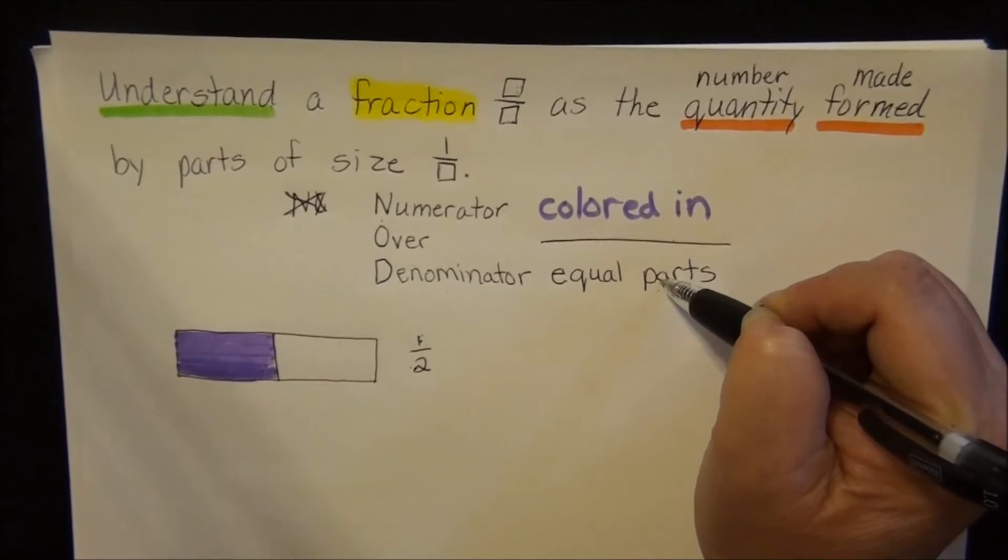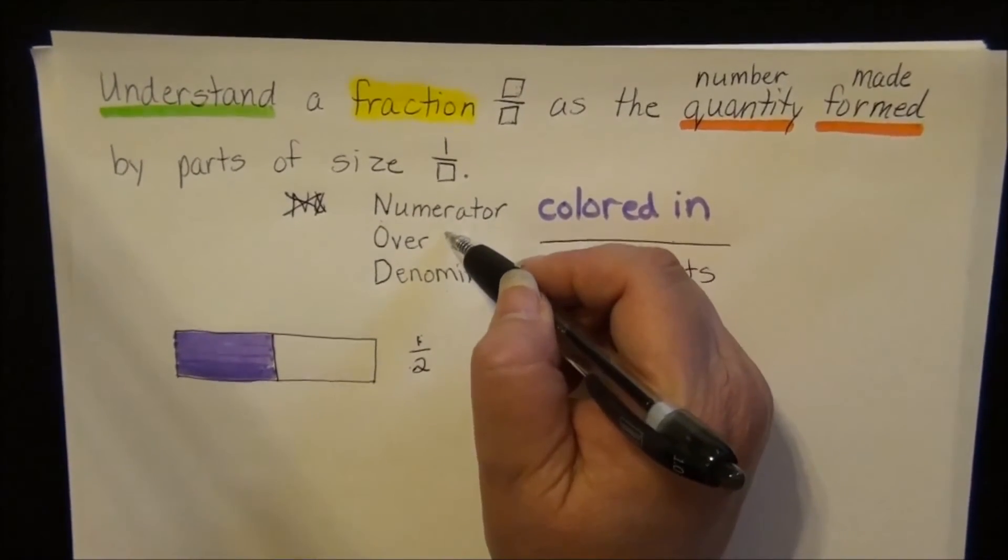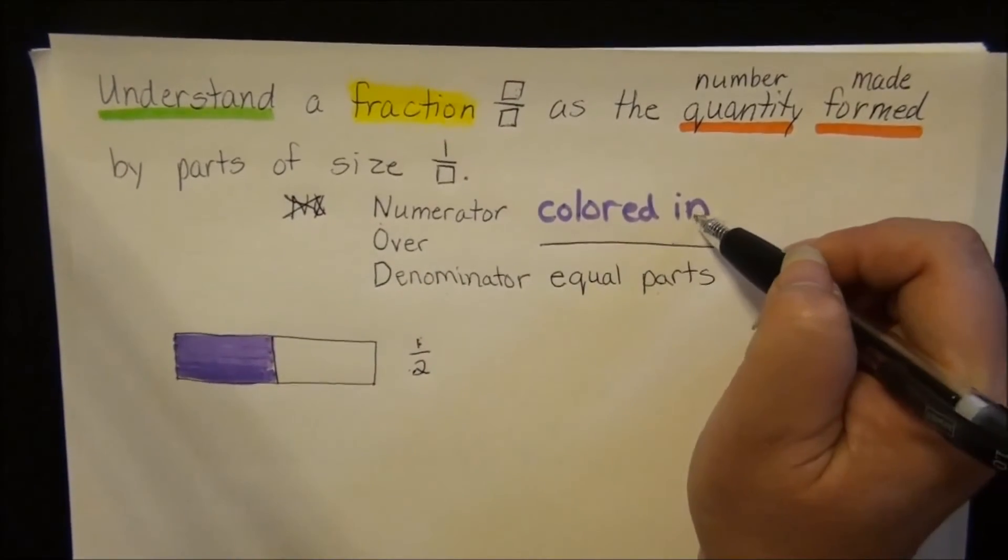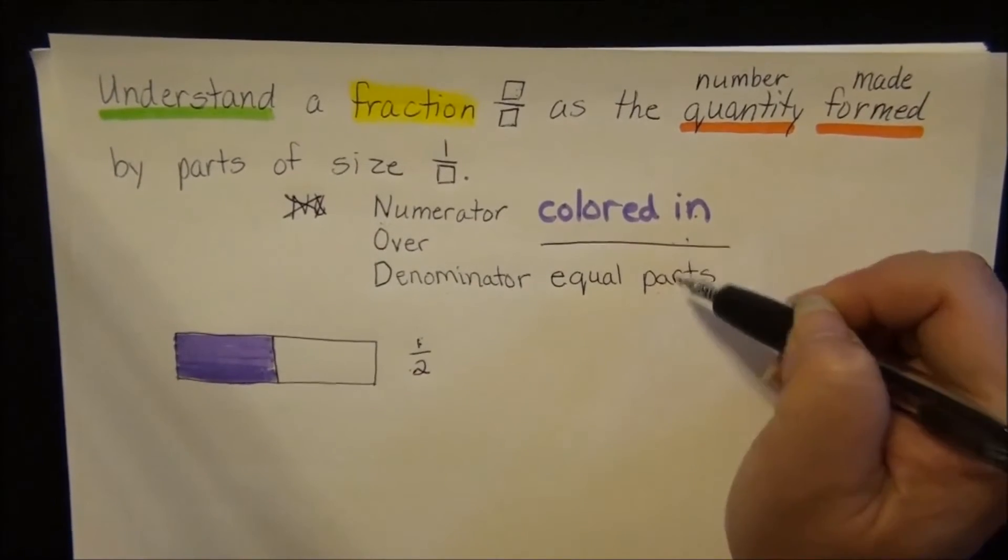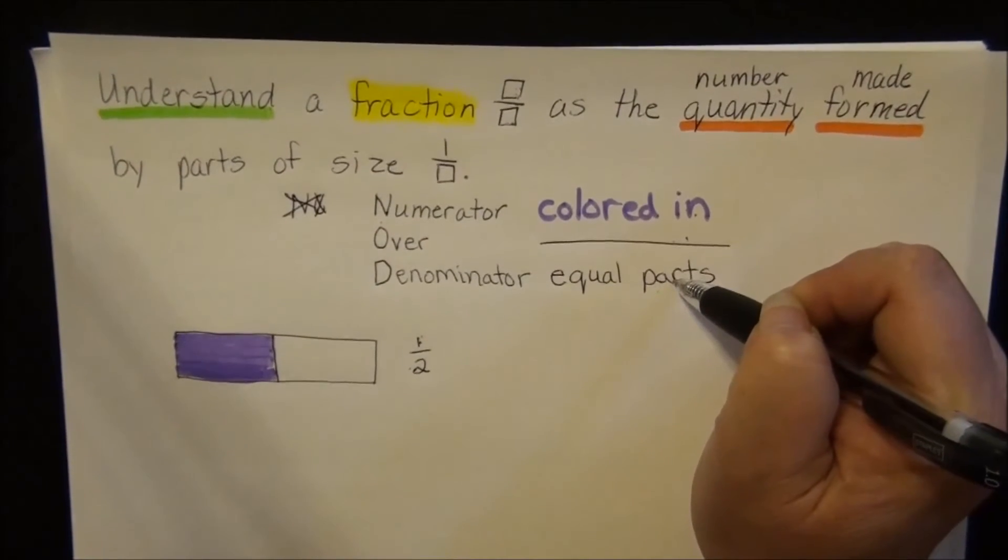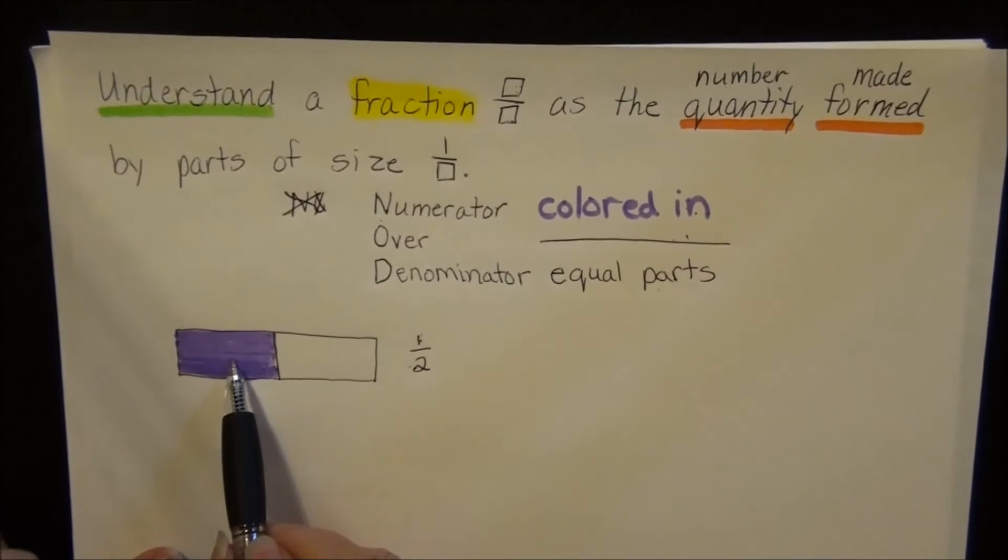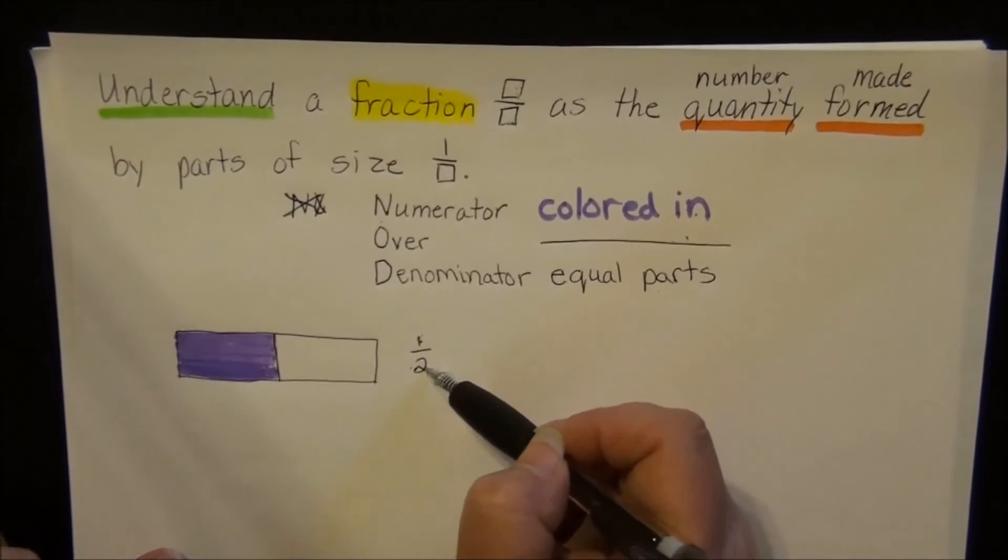And there's a line between them. So this one is over this one. Numerator over denominator, colored in over equal parts. And you can do that while nodding your head. So let's look up at the ceiling and say numerator, look at the screen, over, look down at your belly button, denominator. Look up at the ceiling, colored in, look at the screen, over, look down at your belly button, equal parts. And that's really important to remember. That is going to be so key for your success with fractions. Okay, so we colored in one equal part out of two altogether. So one is our numerator, two is our denominator.